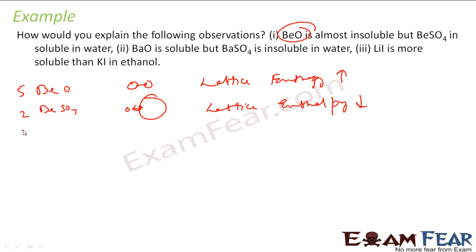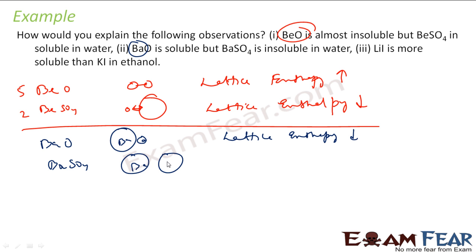Similar case applies here also. If you see, Ba is bigger in size. So if you see BaO, Ba is this and O is this. So again here, the lattice enthalpy will be less. But if you talk about BaSO4, sulfate ion is big. In fact, both Ba and SO4 are bigger in size, so the lattice enthalpy is more. Since the lattice enthalpy is more, the hydration enthalpy will not compensate this value, but hydration enthalpy will compensate the BaO value. So BaO becomes soluble.